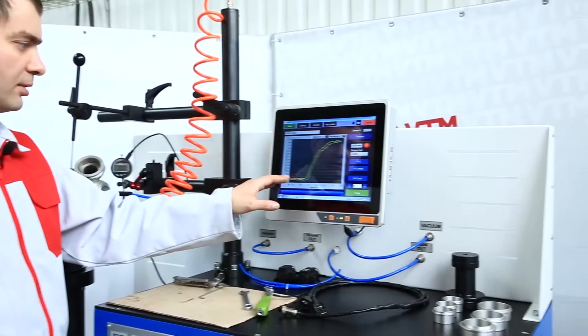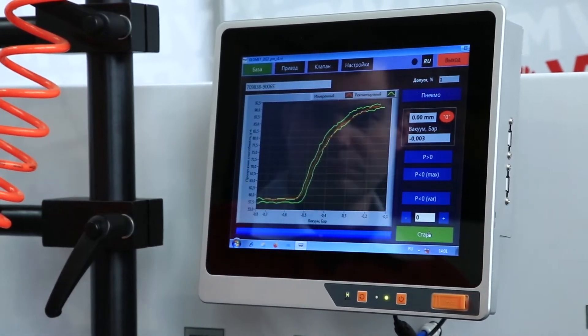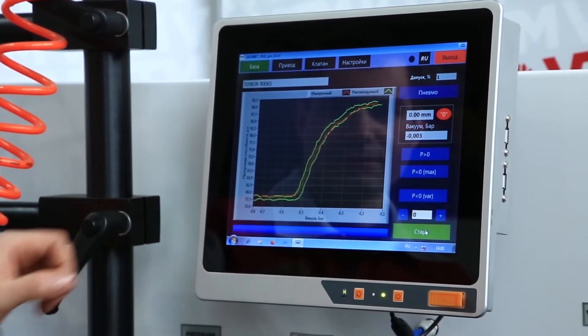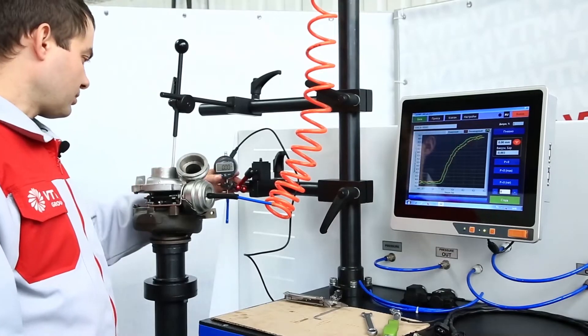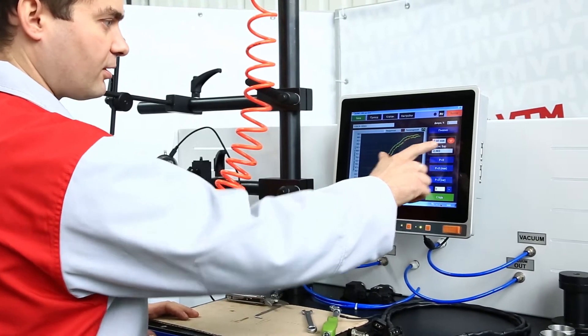The green lines are our tolerance field. The red line is our graph. We can see that we have configured the turbocharger. We also have a machine equipped with an electronic indicator. You can also see its readings on the monitor.